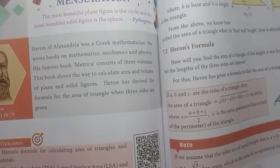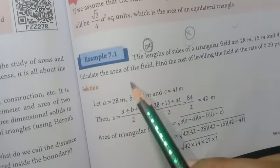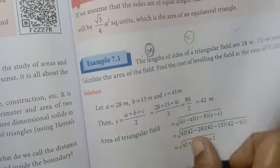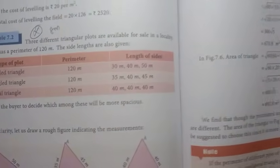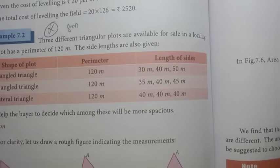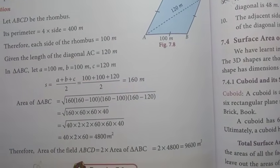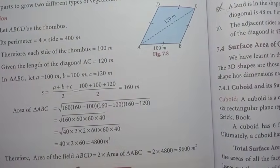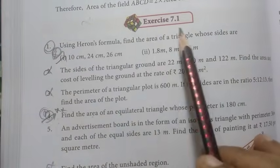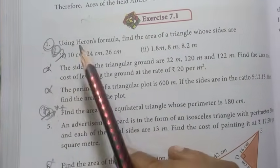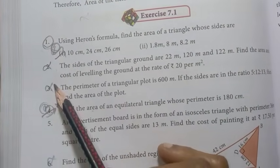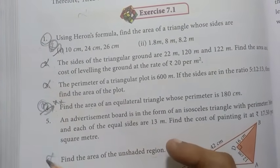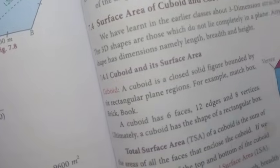Chapter 7: Mensuration. Page number 249, Example 7.1 important, Example 7.2 important. Then page number 252, Example 7.3 important. Exercise 7.1: 1st, 2nd, 3rd, 4th, and 6th — important questions.